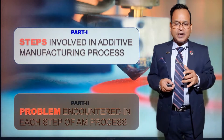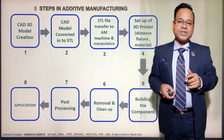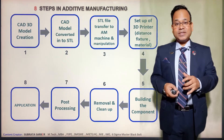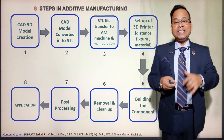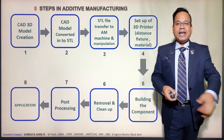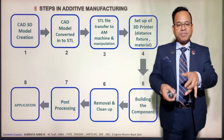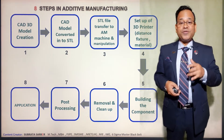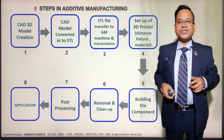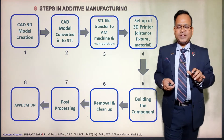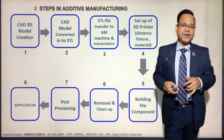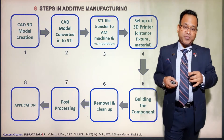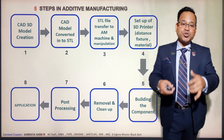To start the process of additive manufacturing, there are eight distinguished steps. Number one is creating a 3D CAD model of the component. Then this CAD model needs to be converted into STL format. The STL model is fed into the additive manufacturing machine with a language conversion. Then there is machine setup — parameters, job holding, fixtures, and any additional supports needed. Fifth is building — the machine automatically builds the component. Sixth is removal and cleanup of the component from the machine.